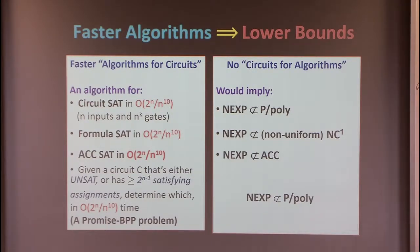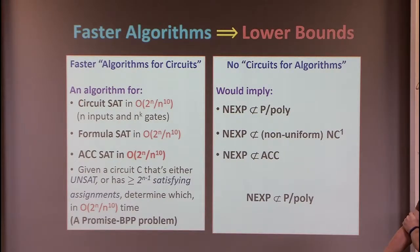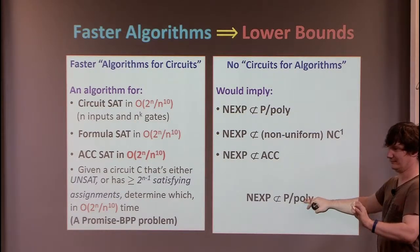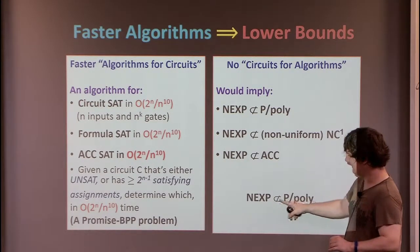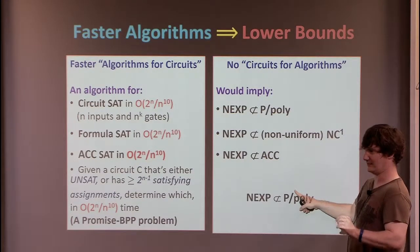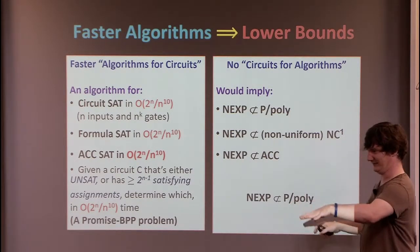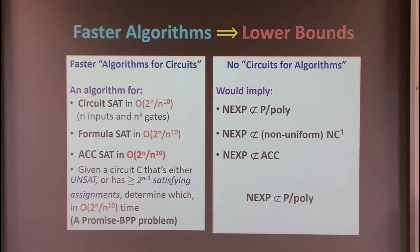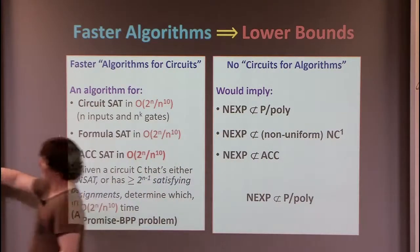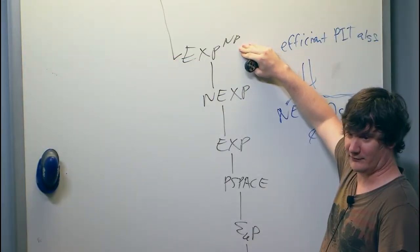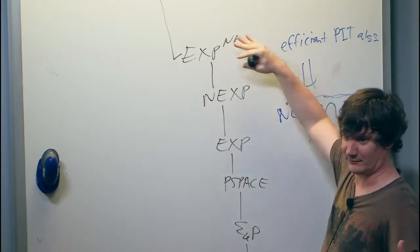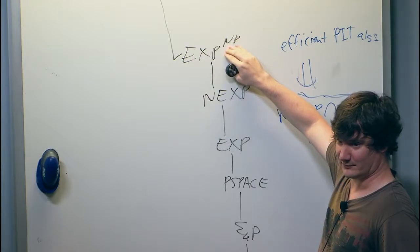Since the original paper, work with Rahul Santana has shown that this connection — between distinguishing unsat from sat-almost-everywhere and getting lower bounds — also holds for really low circuit classes like TC0, constant depth majority gates. Having some algorithm solving this very basic derandomization problem will get you lower bounds against TC0 circuits.